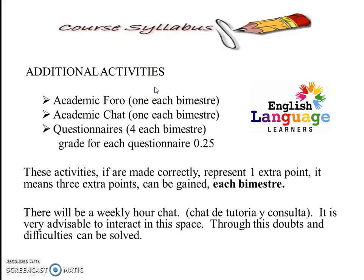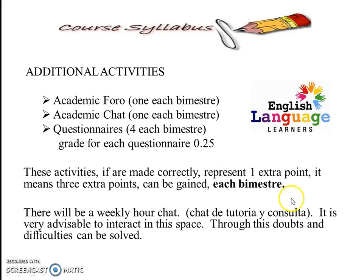Additional exam activities will be held during the semester: an academic forum — one in each semester, meaning two in the year; an academic chat — one in each semester; and questionnaires for each semester, making eight of them during the whole year. The grade for each semester is 0.5 points per activity, meaning one point for the questionnaires. These activities, if completed correctly, will represent one extra point — so three points can be gained each semester for these activities, six altogether.